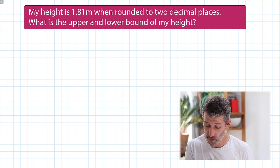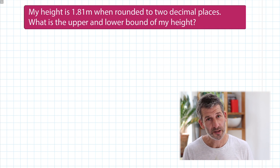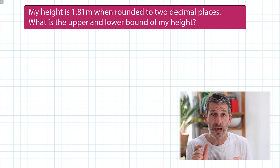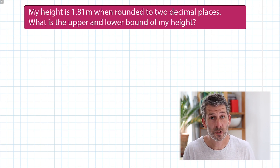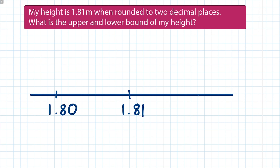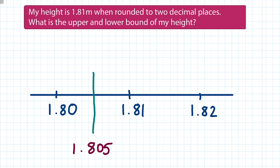My height, when rounded to two decimal places, is 1.81 meters. We're going to do our number line, and since we're talking about two decimal places, the accuracy of my number line is going to be to two decimal places: 1.80, 1.81, 1.82. The lower bound is exactly halfway between 1.80 and 1.81, which is 1.805. The upper bound is exactly halfway between 1.81 and 1.82.